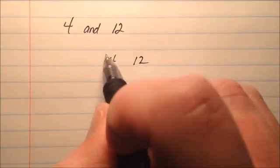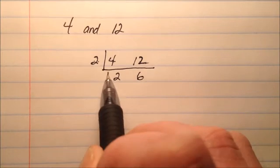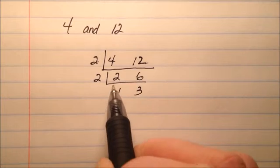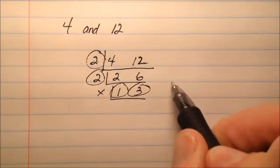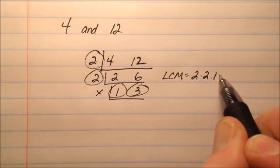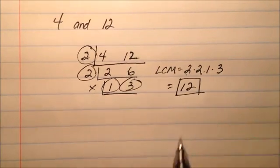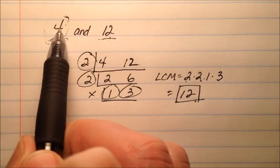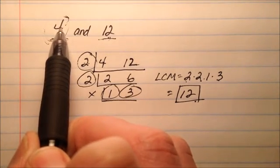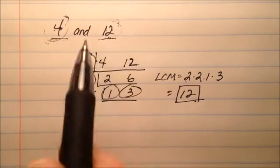In this final example, we're going to find the LCM of 4 and 12. We pull out common factors — 2 comes out, giving 4 divided by 2 is 2 and 12 divided by 2 is 6. There's another 2 that can come out, leaving 1 and 3. Since one of them is 1, we can't go any further. The LCM is all those factors multiplied together: 2 times 2 times 1 times 3, so 2 times 2 is 4, times 3 is 12. Notice that one of our original numbers is the LCM — that's because 4 is a factor of 12. When one number is a factor of the other, the larger one is simply the least common multiple.